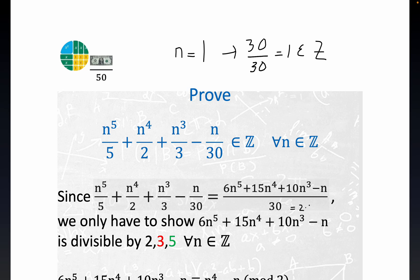That's the prime decomposition of 30: 2 times 3 times 5. So if we can individually show that this expression, this expression in the numerator, or the numerator, is always divisible by 2, 3, and 5 for all integers we'll be done.